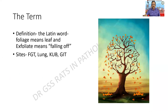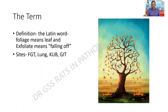What does the term exfoliation mean? It comes from the Latin word — 'foliage' means leaf, and 'exfoliate' means falling off. Look at this tree which is given as an analogy: the leaves are being shed off. Similarly, cells are constantly being shed from various surfaces of our body — particularly from the female genital tract, lung, kidney, urinary bladder, gastrointestinal tract, etc. — and are used for the study of pathology in those regions.